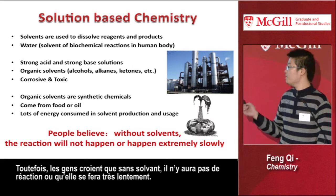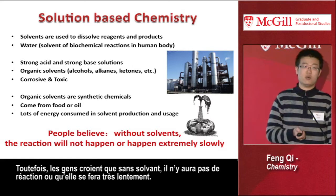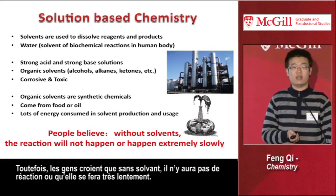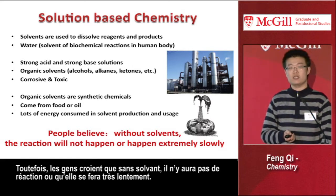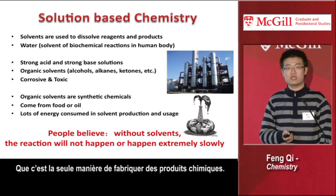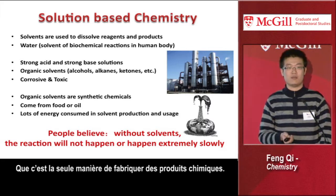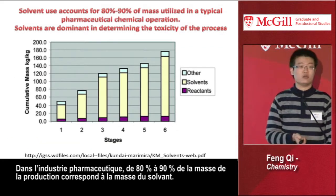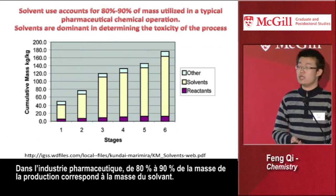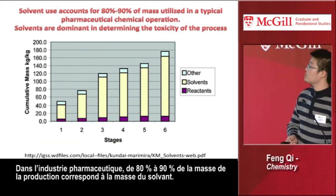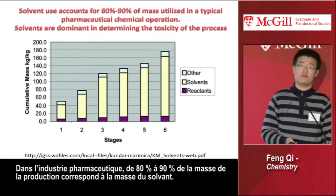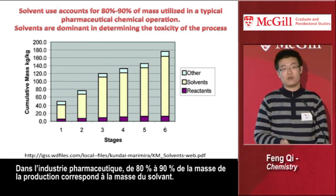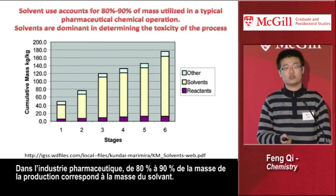However, people believe that without solvent the reaction cannot happen, or will happen extremely slowly. They think it is the only way to make chemicals. In the pharmaceutical industry, 80% to 90% of the mass of a pharmaceutical operation equals the mass of the solvent.